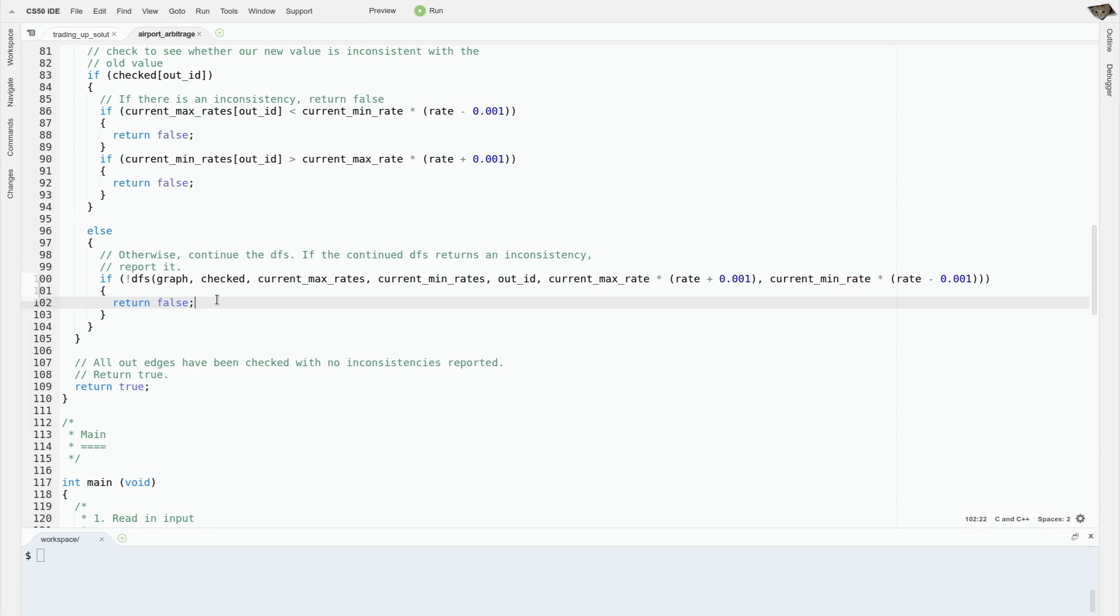This way, reports of inconsistency will bubble up the stack, and the first call will return false. If no inconsistencies were reported from any of the neighbors, then we'll return true, saying that there are no inconsistencies at this part of the graph.